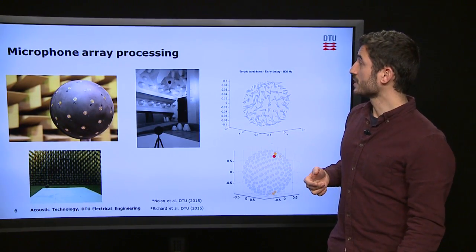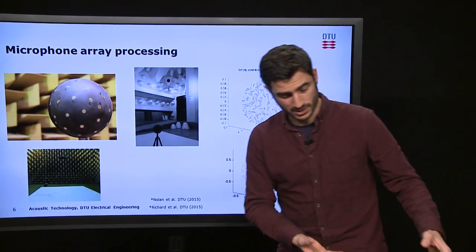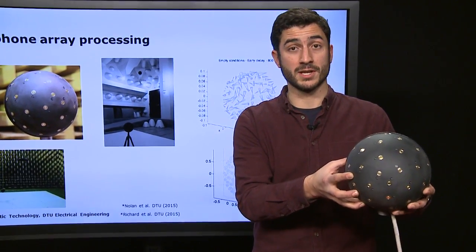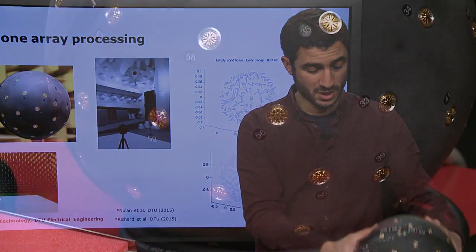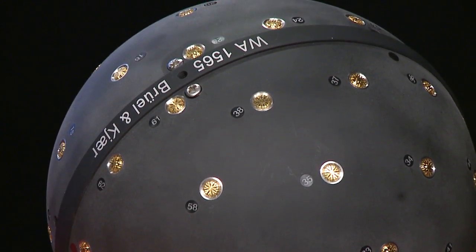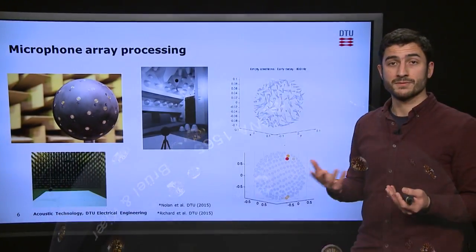There are other alternatives such as spherical arrays, like the one that I brought here, that make it possible to distinguish waves traveling in any possible direction, and therefore are very useful for sound field analysis in enclosures such as rooms or vehicle interiors.